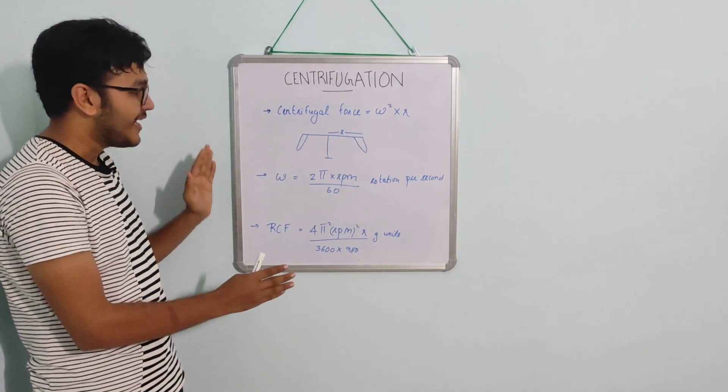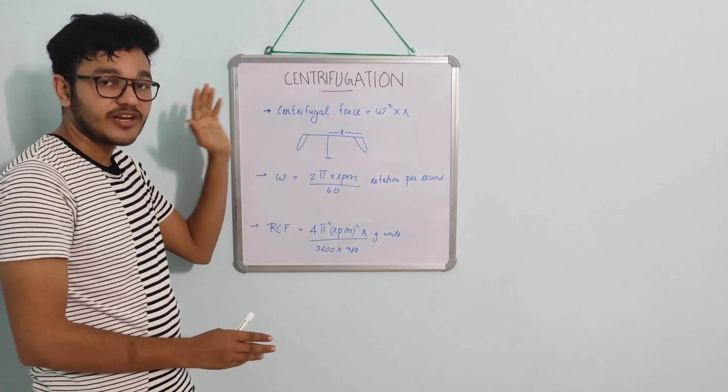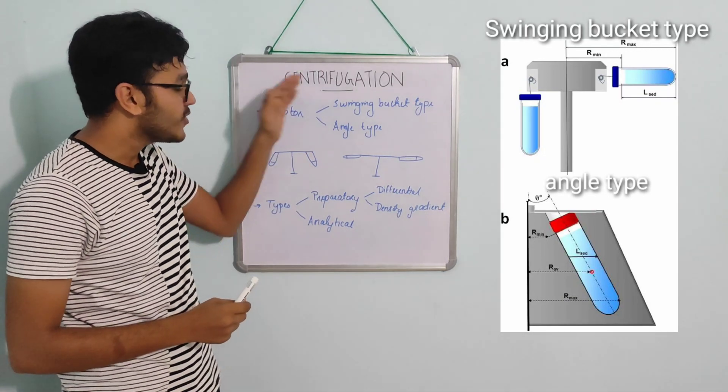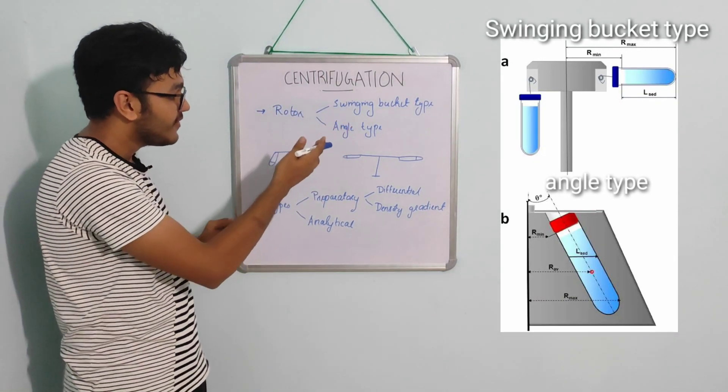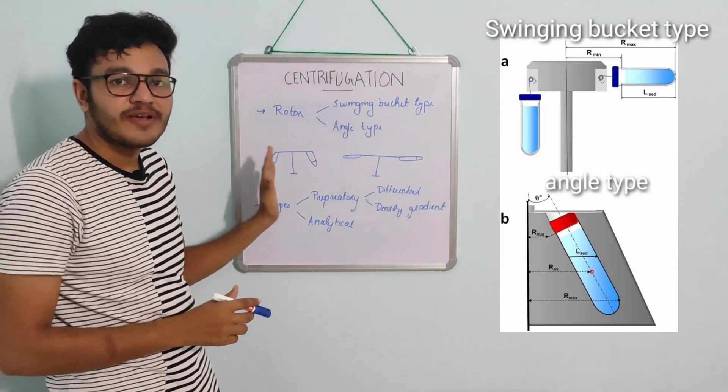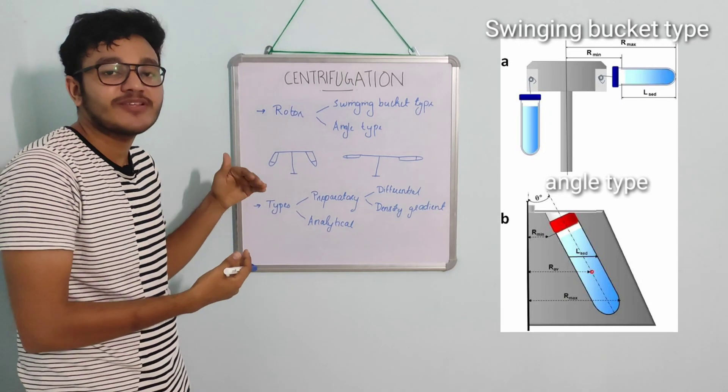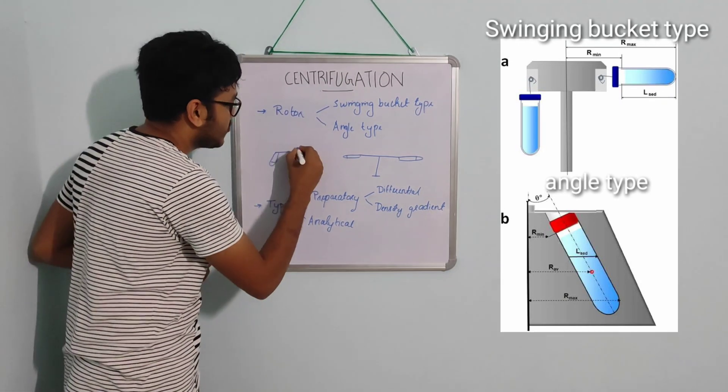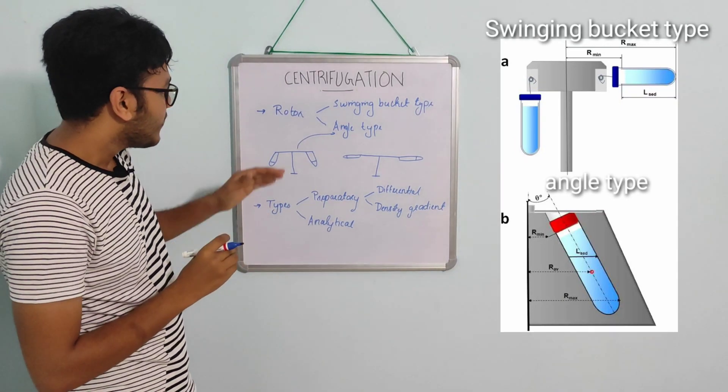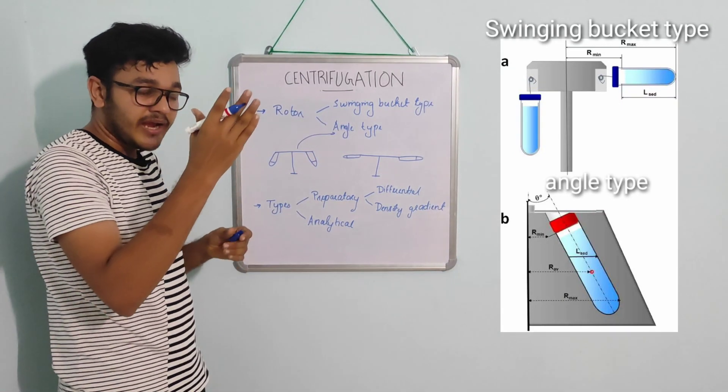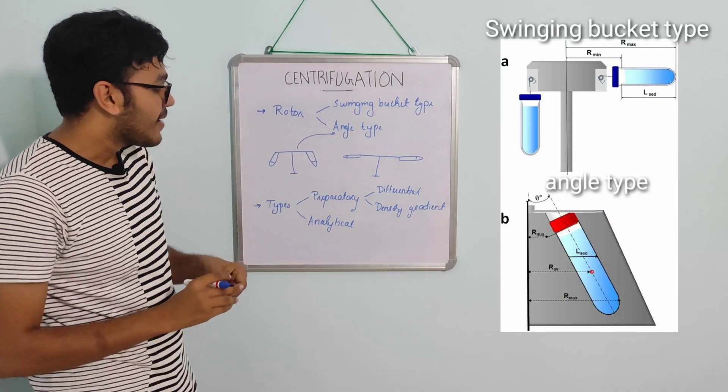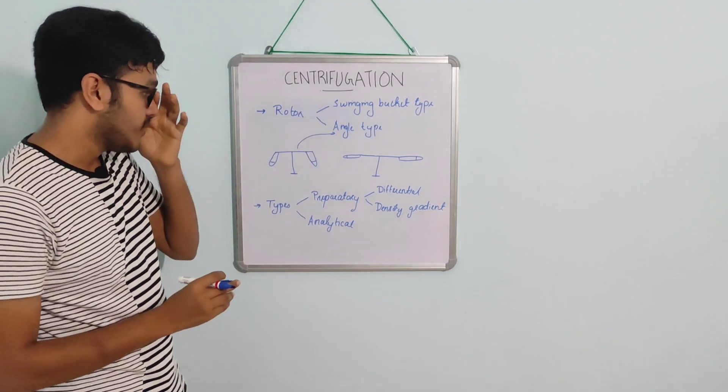Based on the nature of the rotor, the centrifuge is divided into two: swinging bucket type and angle type. In the angle type, the rotor and sample holder is in a fixed angle position. When it is rotating at high speed, the position of the sample holder does not change. Angle type is commonly seen in chemistry labs and biology labs. Whereas in the swinging bucket type, the sample holders first will be in a vertical position, but when rotating at high speed, the sample holders move from the vertical position to horizontal position.